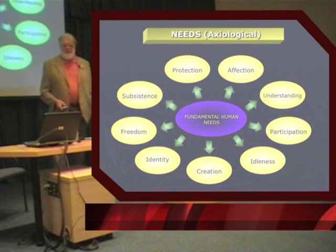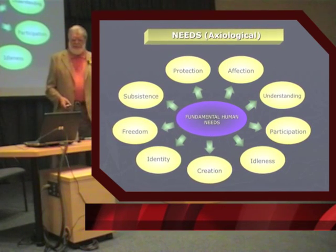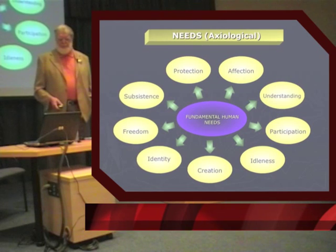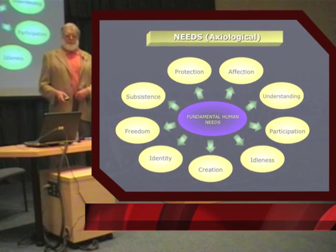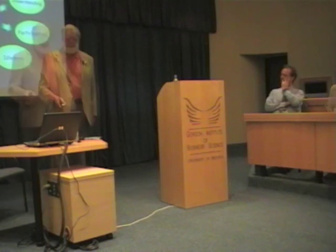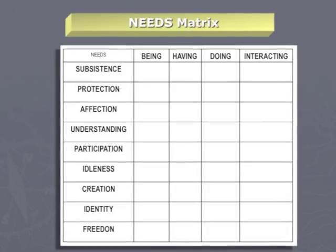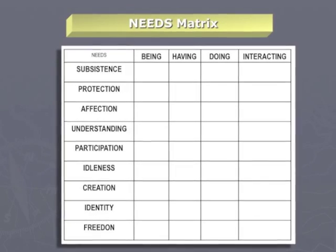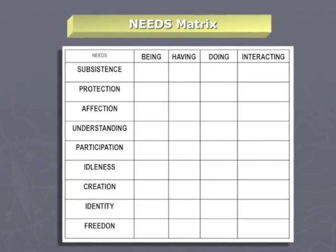Protection, affection or love, understanding, participation, idleness, creation, identity, freedom, subsistence. If we have these two ways of classifying needs, this gives origin to a very interesting matrix, which we call the needs matrix.